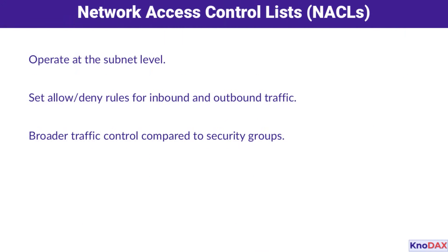Moving a level up, we have Network Access Control Lists, or NACLs. These operate at the subnet level, providing broader traffic control. With NACLs, you can set allow or deny rules for both inbound and outbound traffic, adding an extra layer of protection for your VPC.